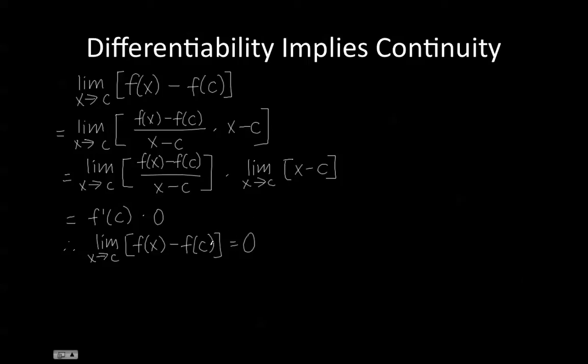So if we break up this limit, we get the limit as x approaches c of f of x minus the limit, which is equivalent to the limit as x approaches c of f of x minus f of c because we're plugging in a constant. So we're always going to get a constant. And that is equal to 0 because of what we just figured out using algebra.